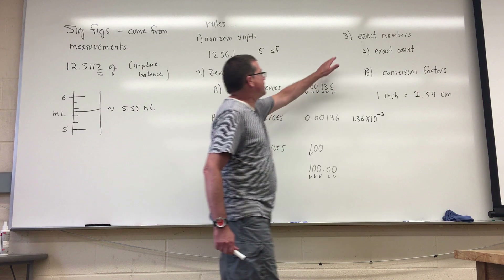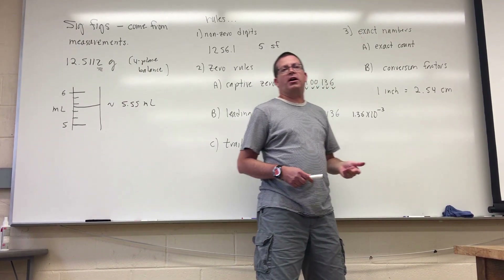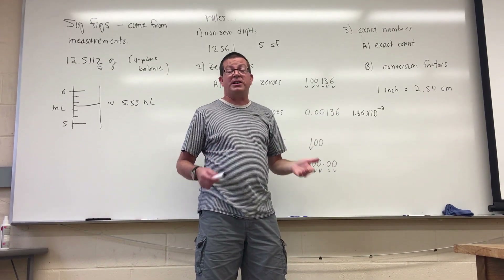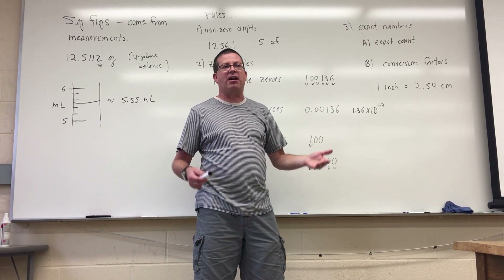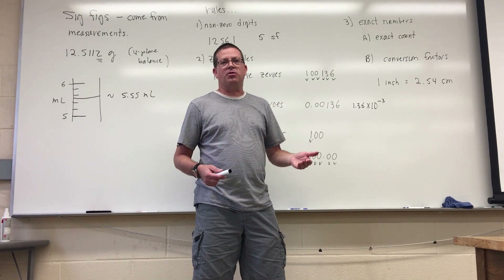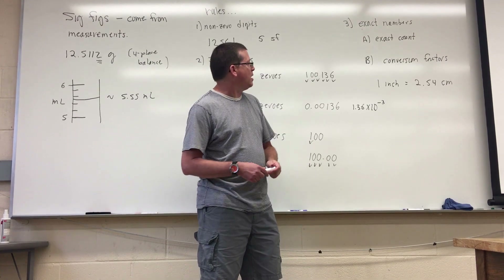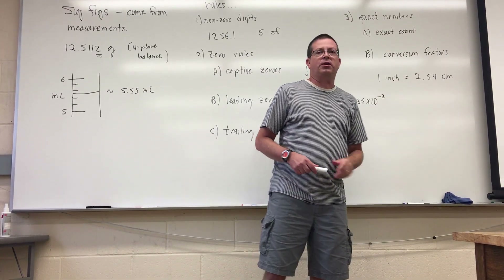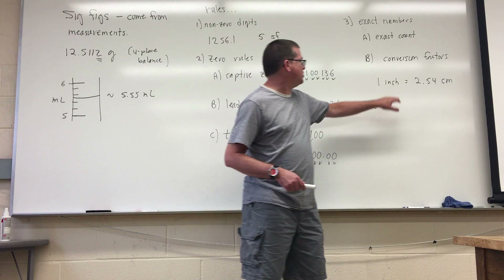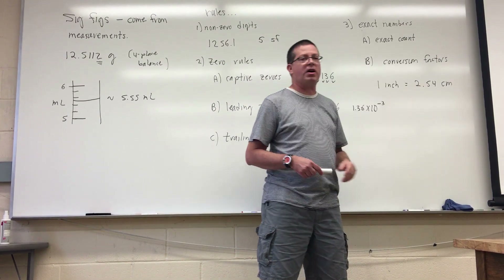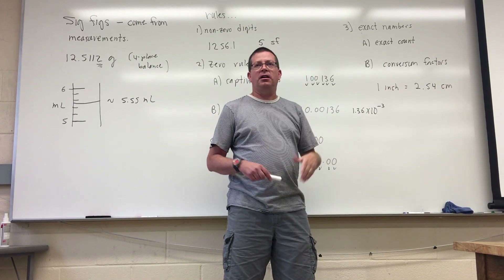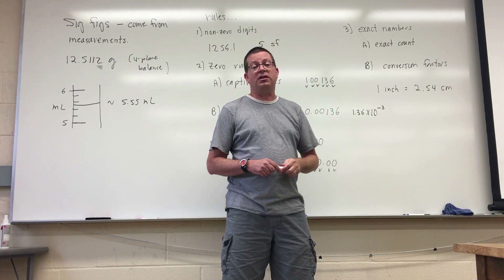The last rule deals with exact numbers. There are two situations: first, if we have an exact count — for example, 28 people in a classroom — that can't be a fraction, so it's an exact number. Exact numbers have an unlimited number of significant figures. The other situation involves conversion factors derived from equivalency statements. Anytime you use an equivalency statement to derive a conversion factor, those are exact numbers with unlimited significant figures.